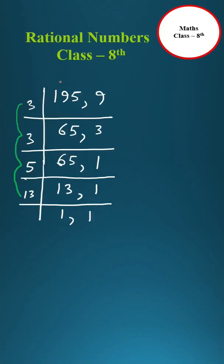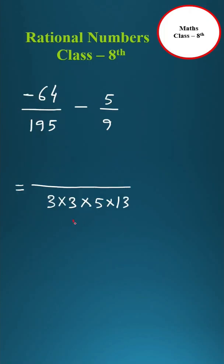So LCM of 195 and 9 is 3 into 3 into 5 into 13. Now divide this LCM by 195.